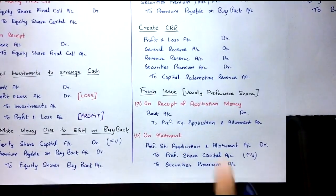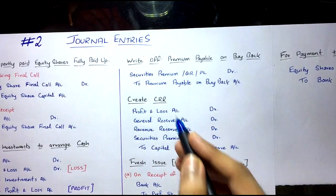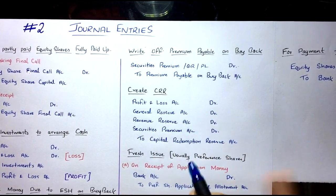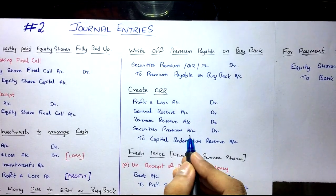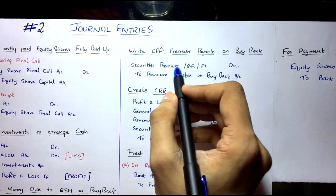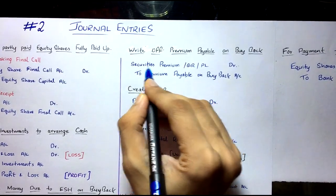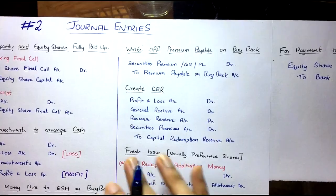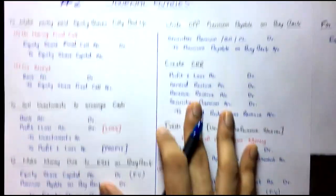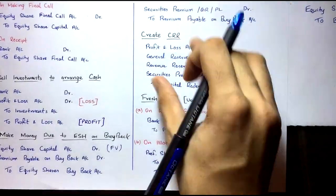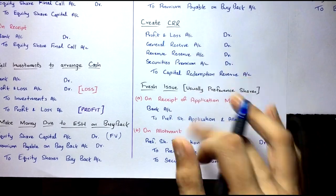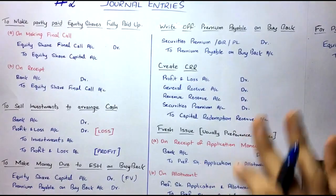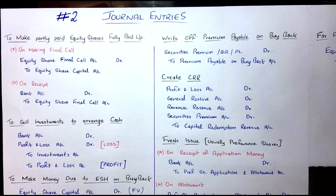Remember: only face value can replace face value. When creating CRR, you can use Profit & Loss, General Reserve, Revenue Reserve, and Securities Premium — but you cannot use Revaluation Reserve. First priority goes to Securities Premium; after it is completely exhausted, then use General Reserve or P&L. In the next video, we will solve problems to practically see how to apply these entries.